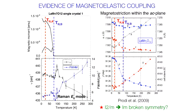It enables us to follow the temperature dependence of the lattice parameters A, B, C. They don't show any singularity at the ordering transition, but the angle beta, which is the monoclinic distortion angle, does show an anomaly — a change of slope — which means that there is a magnetostriction of the AC plane.